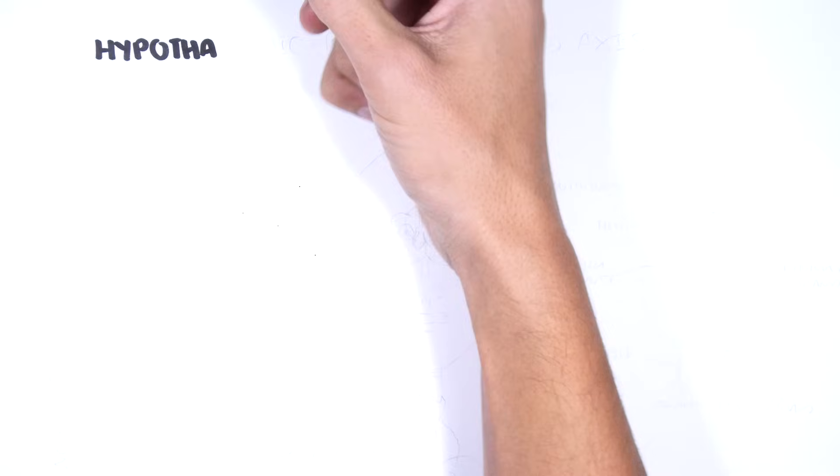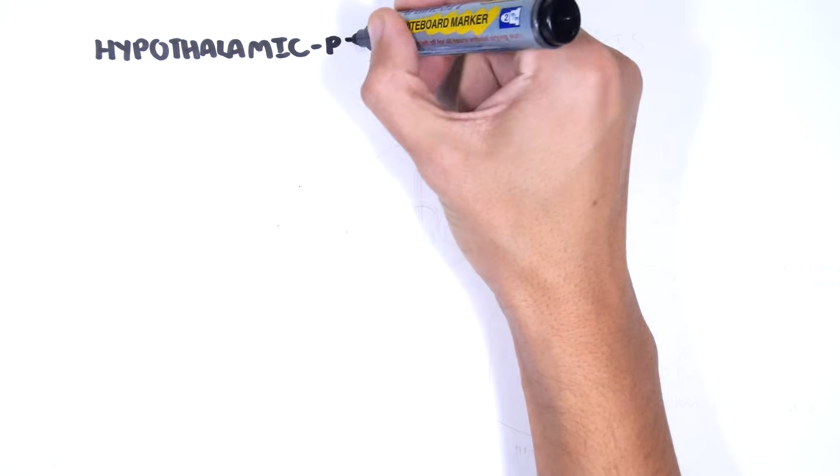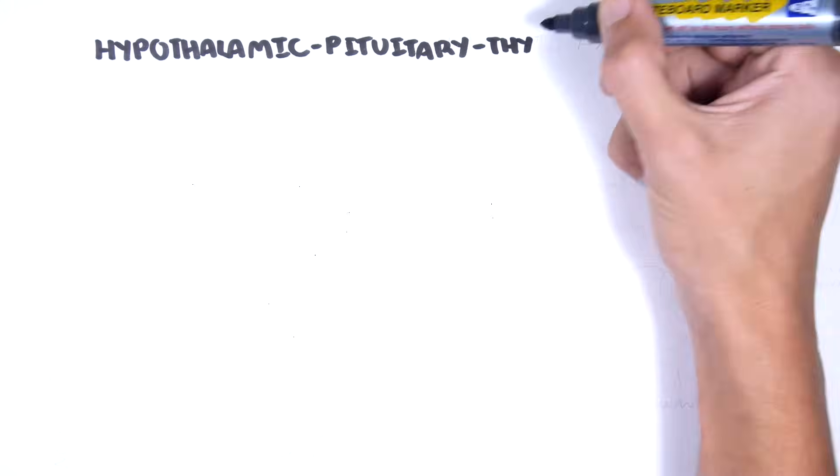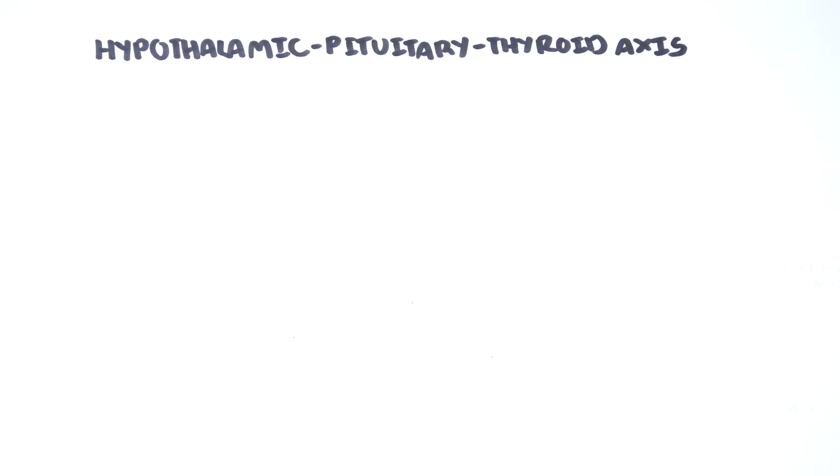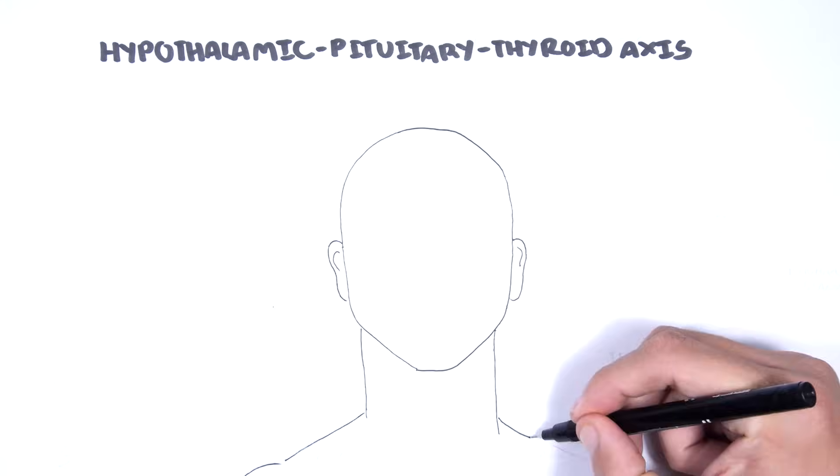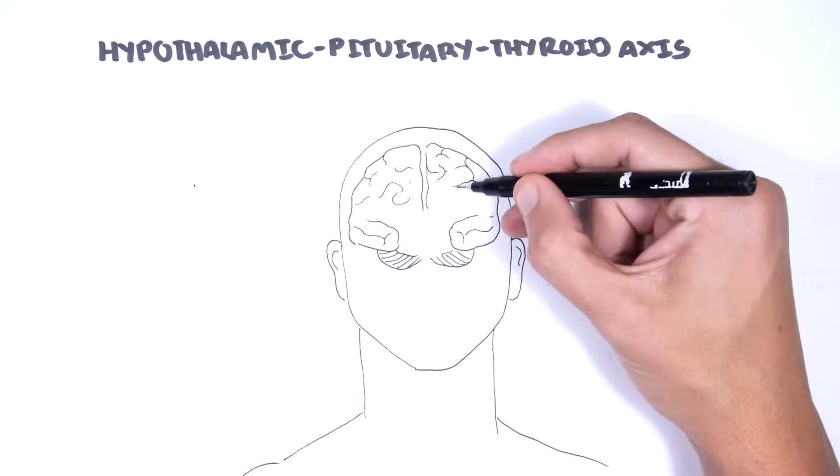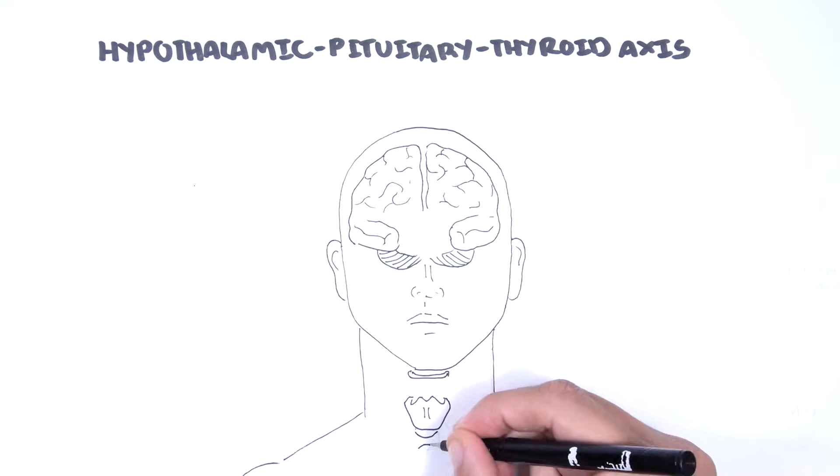Hello, in this video we're going to talk about the Hypothalamic-Pituitary-Thyroid Axis. The Hypothalamic-Pituitary-Thyroid Axis plays the major role in regulating thyroid hormone homeostasis in the body. The thyroid hormones are very important in fetal development and metabolism.